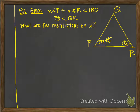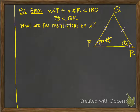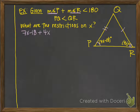Here's one last example. We know that the measure of angle P plus the measure of angle R is less than 180, and that the length of PQ is less than the length of QR. The question asks for the restrictions on x. By substitution using the expressions given for the angles: 7x − 18 + 4x < 180.